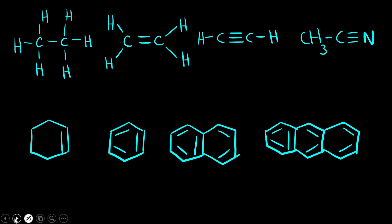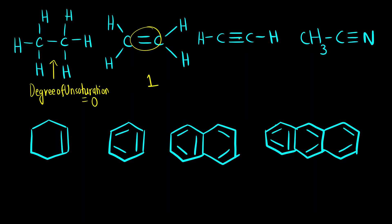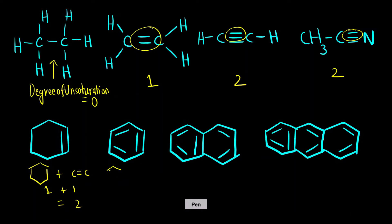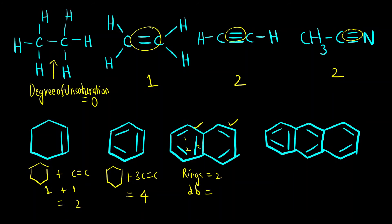Let us apply this to examples. The saturated compound has degree of unsaturation 0. One double bond gives degree of unsaturation 1. Two pi bonds gives 2. For the compound with a cyclohexane ring plus one double bond, it is 1+1=2. Benzene: 1 ring plus 3 double bonds = 4. For naphthalene: 2 rings plus 5 double bonds = 7.